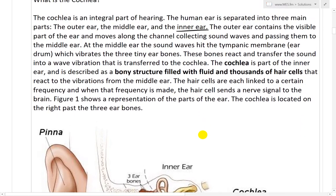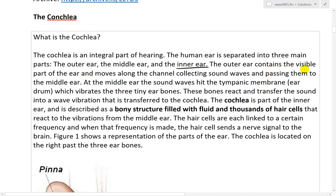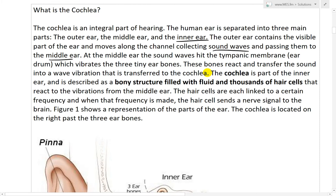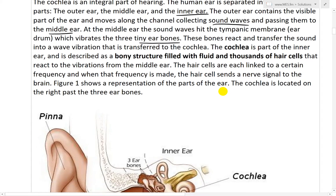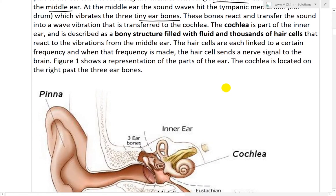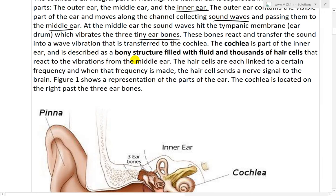And I'll show you that was a pretty cool diagram here. The outer ear contains the visible parts of the ear and moves along the channel, collecting sound waves and passing them to the middle ear. At the middle ear, the sound waves hit the tympanic membrane or eardrum which vibrates the three tiny ear bones and these bones react and transfer the sound into a wave vibration that is transferred to the Cochlea.